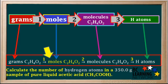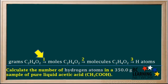Grams to moles to molecules to H atoms. In step one, we convert grams of C2H4O2 into moles of C2H4O2. We start by writing 350.0 grams of C2H4O2 here.